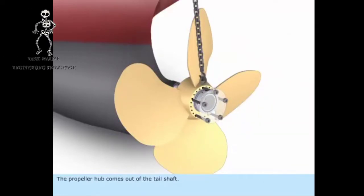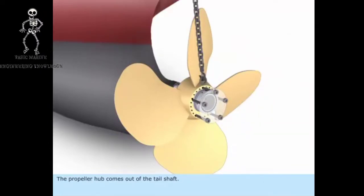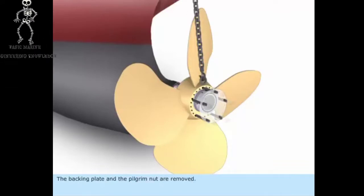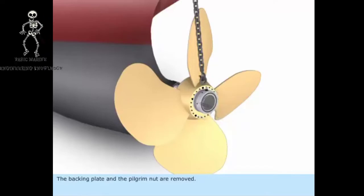The propeller hub comes out of the tail shaft. The backing plate and the pilgrim nut are removed.